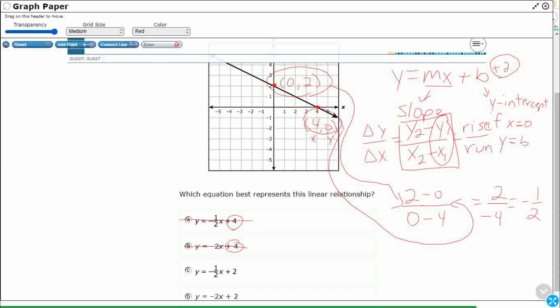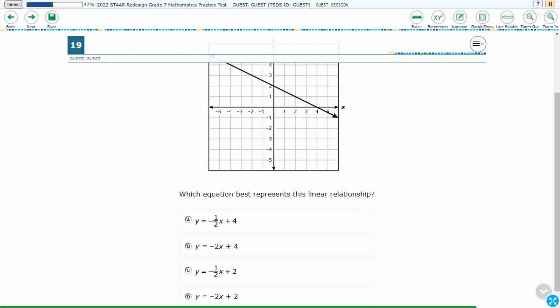I could tell it's negative because it's going down from left to right. If it were going up from left to right, it would be a positive slope. And so we see that right here, our two options are c and d. And it is that negative 1 half is my m, my slope. That's going to be it right there for c. So our answer is y equals negative 1 half x plus 2.